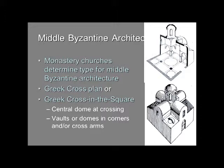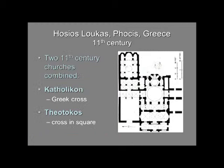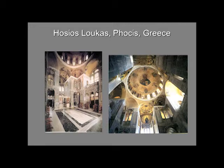The first example is a church in Greece — remember that Greece was part of the Byzantine Empire. This is Hosios Loukas in Phocis, Greece, and this church dates from the 11th century. It is actually two connected churches at this monastery. One is called the Katholikon, which has a Greek cross plan, and the other is dedicated to the Theotokos, to Mary as God-bearer, and it has the cross in the square. So both of those types are represented.